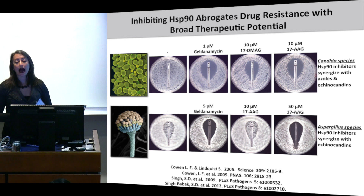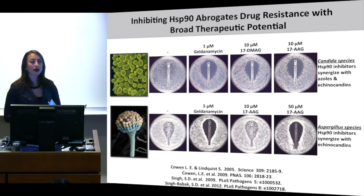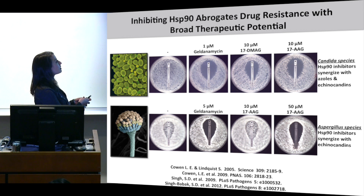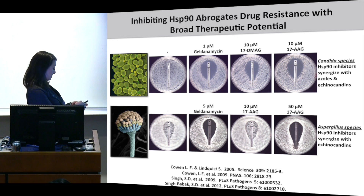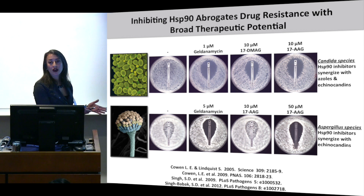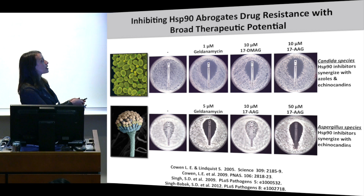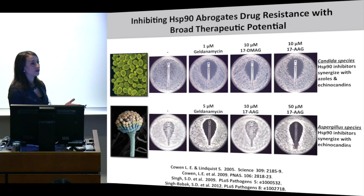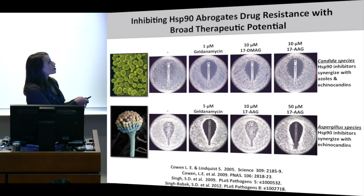Inhibiting Hsp90 abrogates drug resistance in diverse fungal pathogens. Here is Candida albicans — a clinical isolate quite resistant to azoles, growing right up to the test strip. If we include an Hsp90 inhibitor like geldanamycin in the medium at a concentration that doesn't affect growth of the fungus on its own, we see very potent synergy where it makes the antifungal work very effectively, actually converting azoles from static to cidal agents.